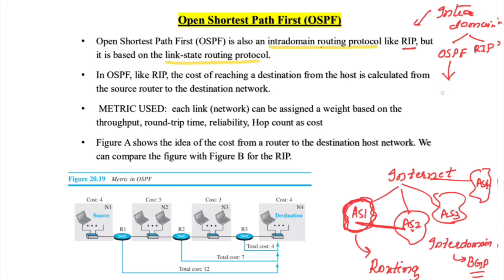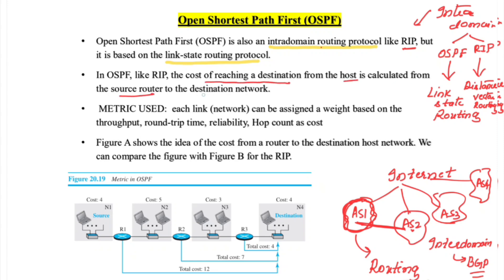OSPF is based on the link state routing algorithm, while RIP is based on the distance vector routing algorithm. Complete details on RIP and distance vector routing are available in the same playlist. In OSPF, the cost of reaching a destination is calculated from the source router to the destination router.